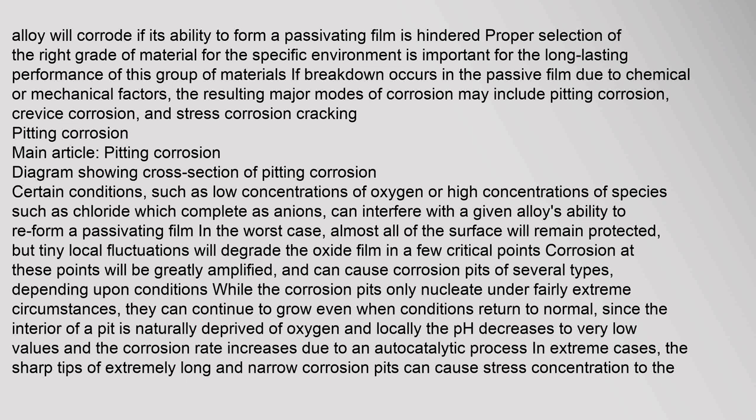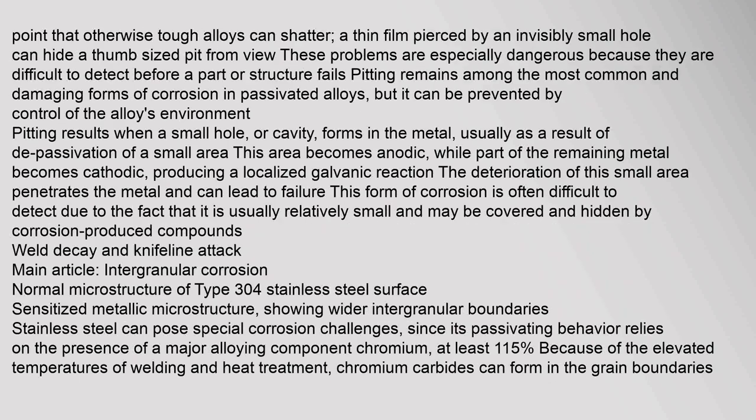Locally the pH decreases to very low values and the corrosion rate increases due to an autocatalytic process. In extreme cases, the sharp tips of extremely long and narrow corrosion pits can cause stress concentration to the point that otherwise tough alloys can shatter. A thin film pierced by an invisibly small hole can hide a thumb-sized pit from view. These problems are especially dangerous because they are difficult to detect before a part or structure fails. Pitting remains among the most common and damaging forms of corrosion in passivated alloys, but it can be prevented by control of the alloy's environment. Pitting results when a small hole or cavity forms in the metal, usually as a result of depassivation of a small area. This area becomes anodic while part of the remaining metal becomes cathodic, producing a localized galvanic reaction. The deterioration of this small area penetrates the metal and can lead to failure.